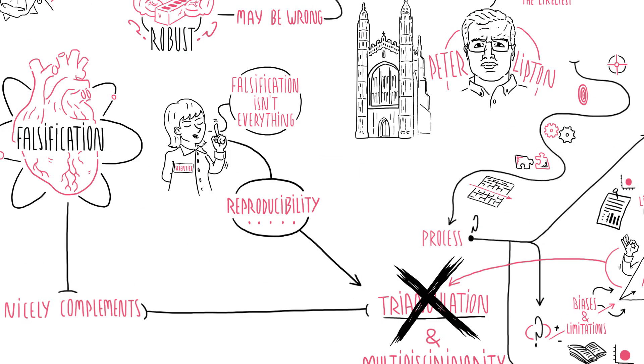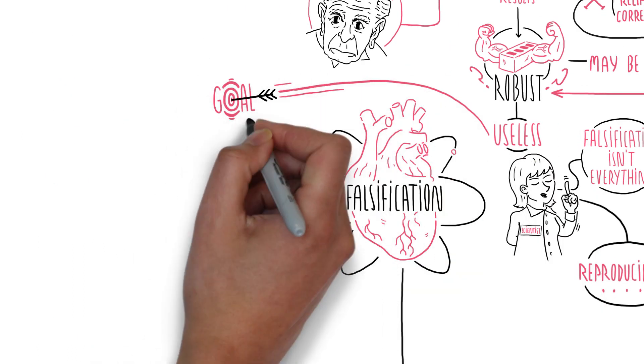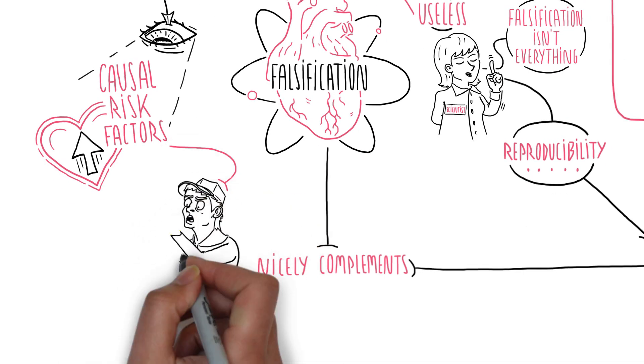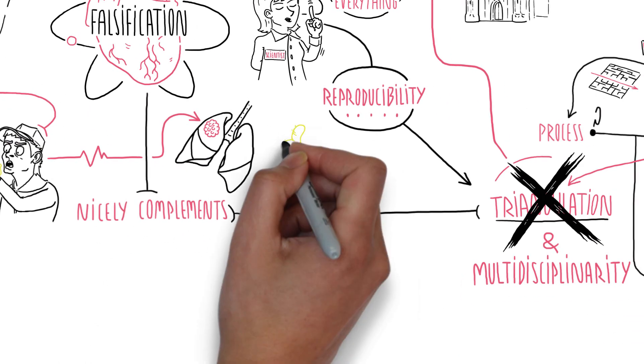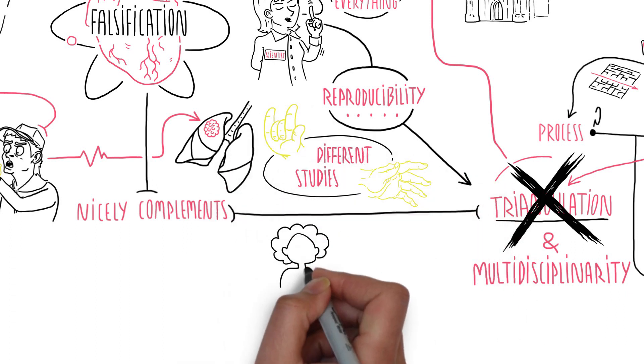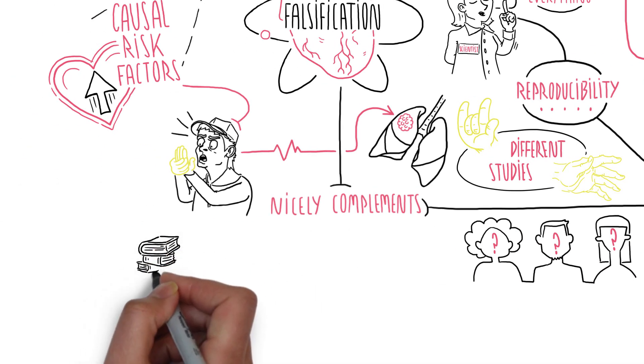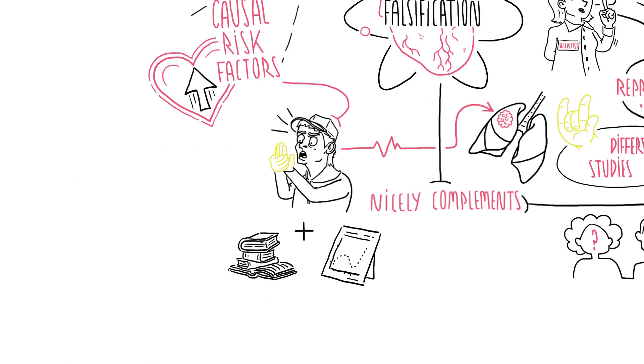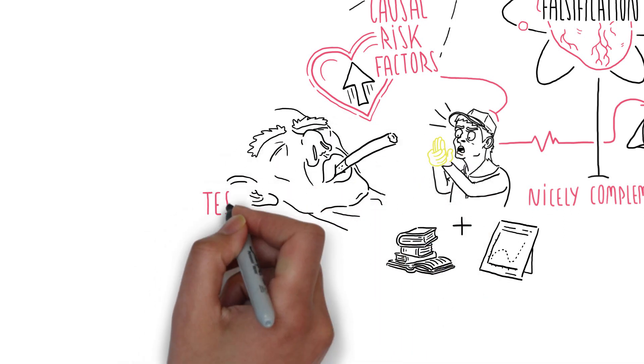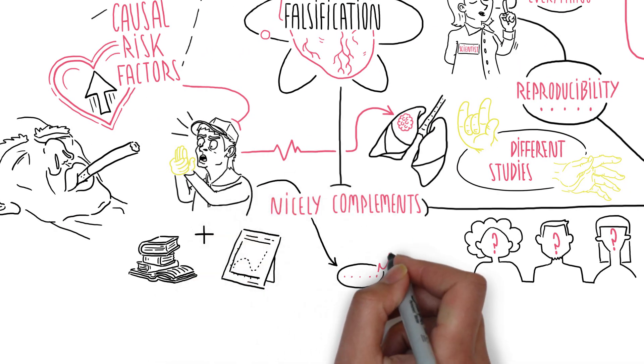Without triangulation, we may find ourselves with robust findings that are ultimately useless if our goal is to identify causal risk factors that we can modify to improve health. For example, having yellow fingers will predict a person's risk of lung cancer, and this finding will replicate robustly across different studies. This might even help us predict who will get lung cancer. But unless we also use this information combined with other evidence, to home in on the underlying risk factor, cigarette smoking, and test this directly, that information alone will be of little use in understanding what causes lung cancer.